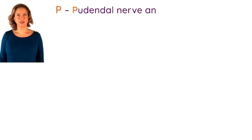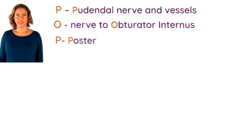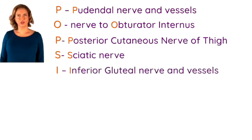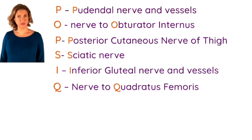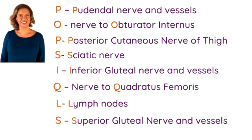So let me summarise. Popsicles: P is for the pudendal nerve and vessels. O is for the nerve to obturator internus. P, the posterior cutaneous nerve of the thigh. S, sciatic nerve. I is for the inferior gluteal nerve and artery. Q for the nerve to quadratus femoris. L is for lymph nodes. And S is for the superior gluteal nerve and artery. So next time anyone refers to your bottom, you can very confidently say that your butt is so sweet you actually have a lolly in it — in fact, you have a popsicle in it. And you wouldn't be wrong.